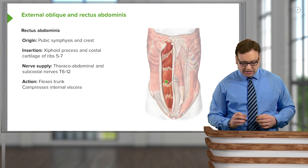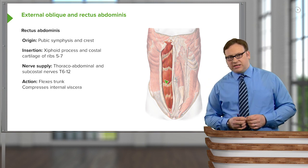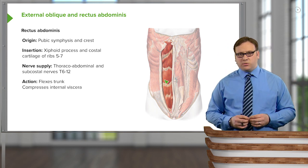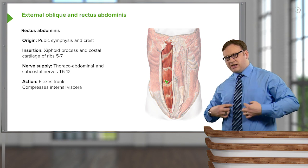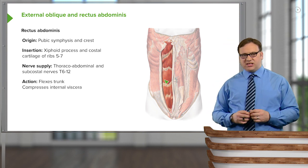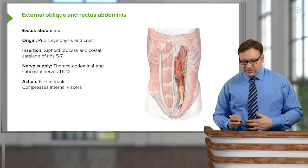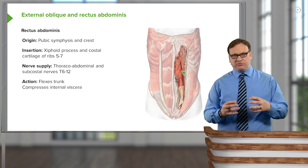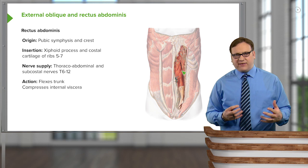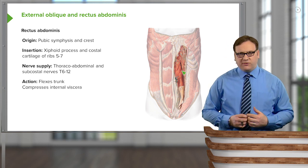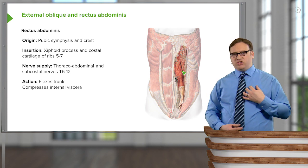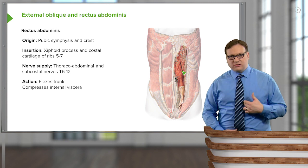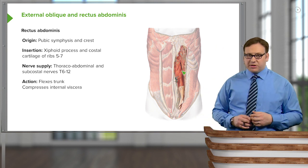Rectus abdominis has a similar nerve supply: the thoracoabdominal and subcostal nerves from T6 through to T12. These nerves come in and innervate the strap muscles either side of the linea alba. Its action is similar to external oblique in compressing the internal viscera, but it is particularly important in flexing the trunk. To develop a six-pack, you do sit-ups — this muscle reducing the distance from the xiphoid sternum down to the pubic symphysis through stomach crunches.